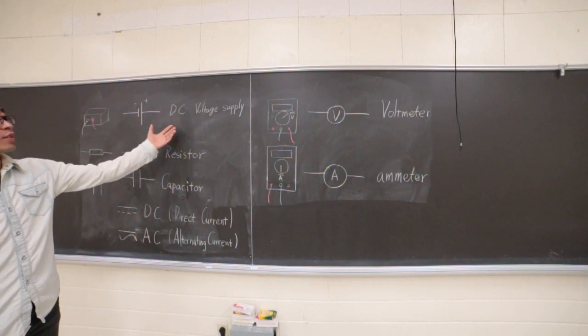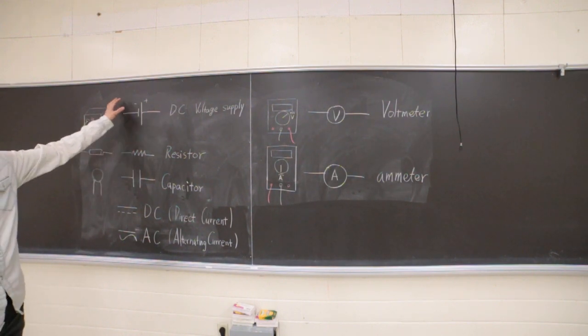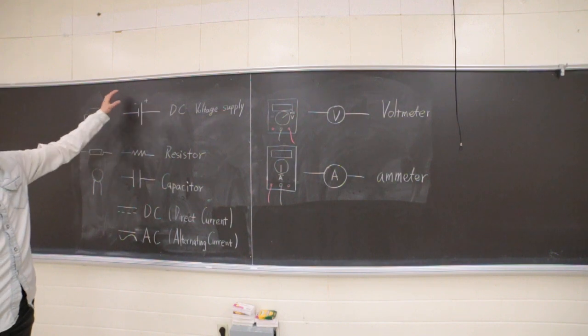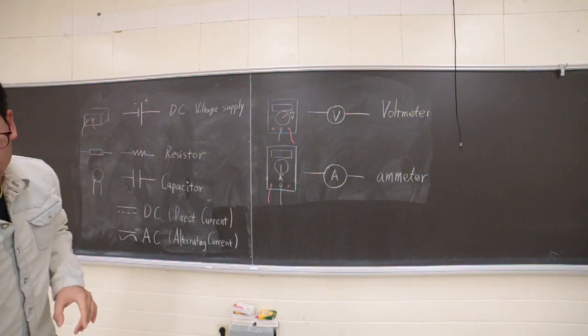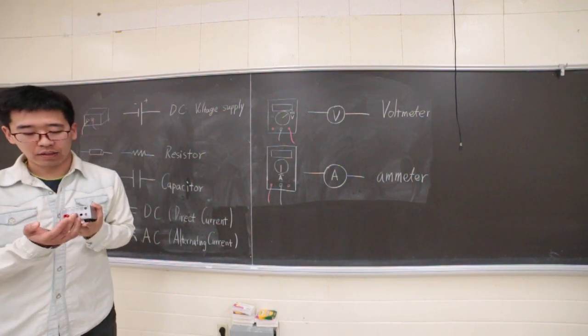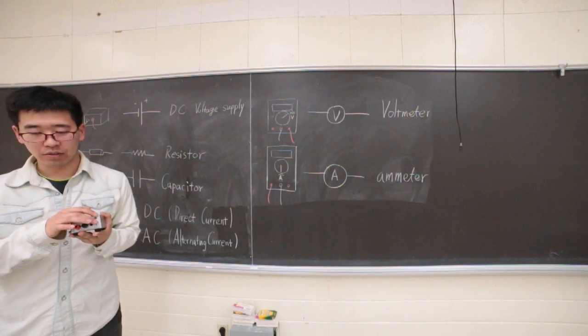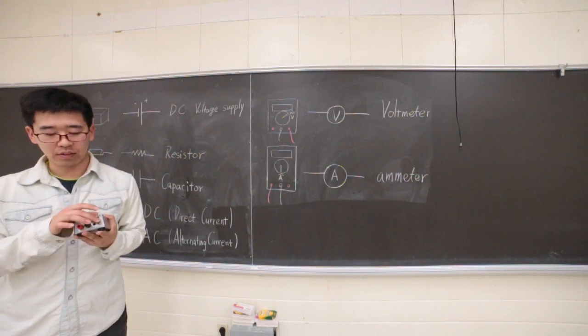So here is the DC supply. The schematic's sign will look like this. In real life, it will look like that. It has a negative side, positive side, and a toggle that turns it on and off.